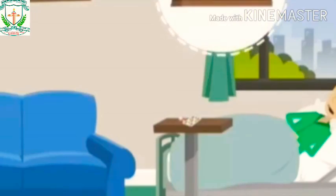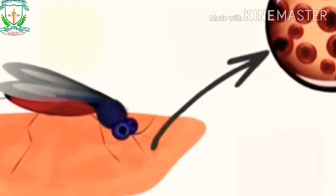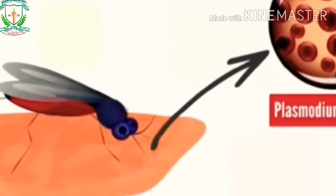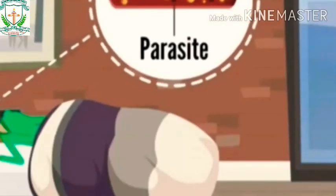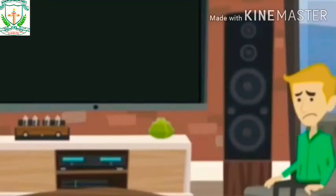Malaria is a life-threatening disease, typically transmitted through the bite of an infected Anopheles mosquito. Infected mosquitoes carry the plasmodium parasite. When a mosquito bites you, the parasite is released into your bloodstream. Malaria can occur if a mosquito infected with the plasmodium parasite bites you.